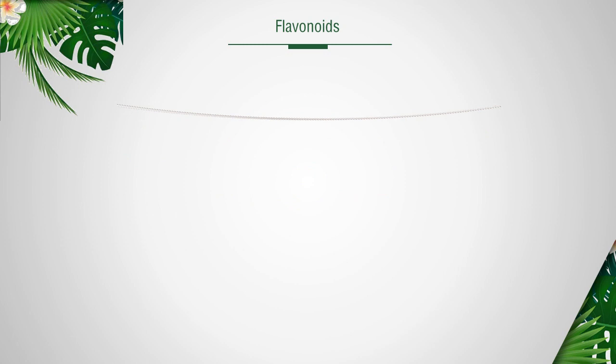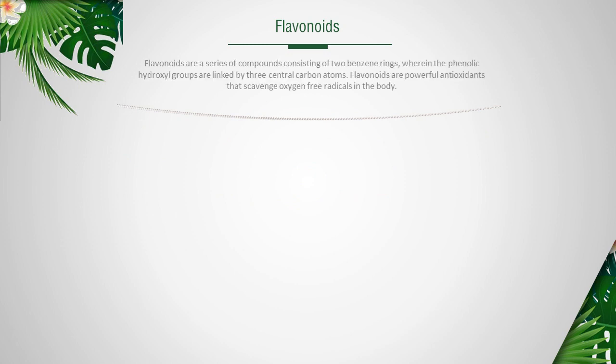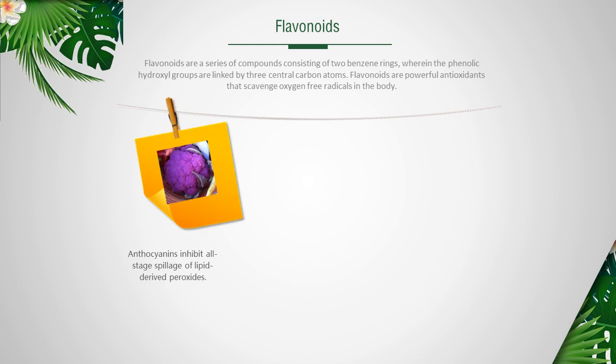Flavonoids are a series of compounds consisting of two benzene rings, wherein the phenolic hydroxyl groups are linked by three central carbon atoms. Flavonoids are powerful antioxidants that scavenge oxygen-free radicals in the body. For example, anthocyanins inhibit all-stage spillage of lipid-derived peroxides. This ability to prevent oxidation is more than 10 times that of vitamin E, which prevents cell degeneration and aging.